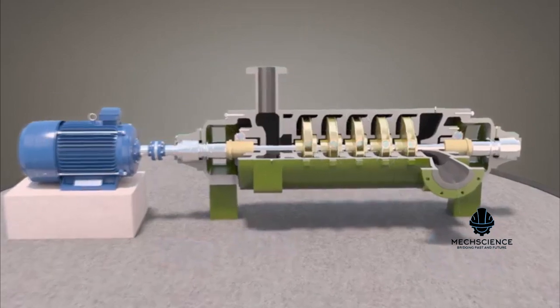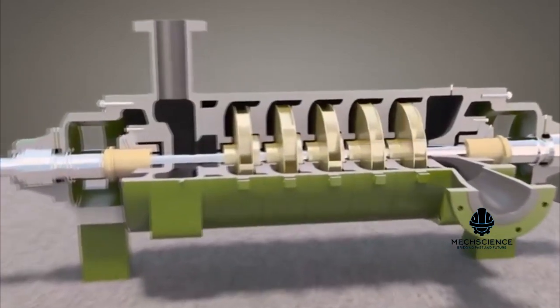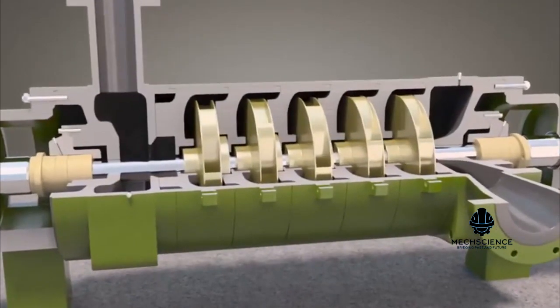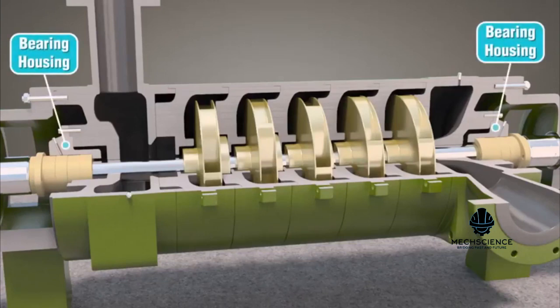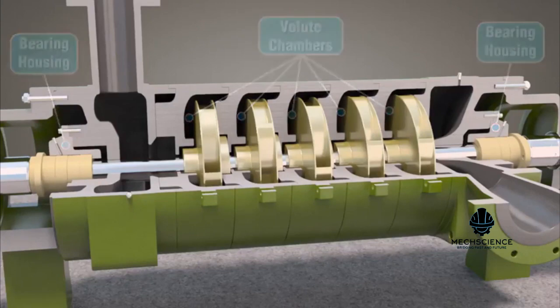The pump casing is the body of the pump and contains the shaft and impellers. The casing provides shaft bearing housings at each end and a volute chamber for each impeller.